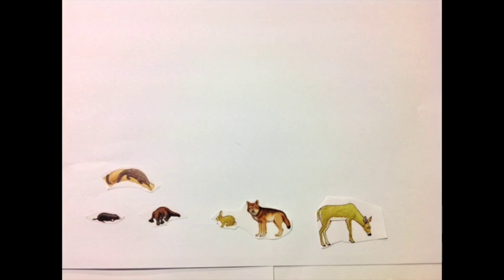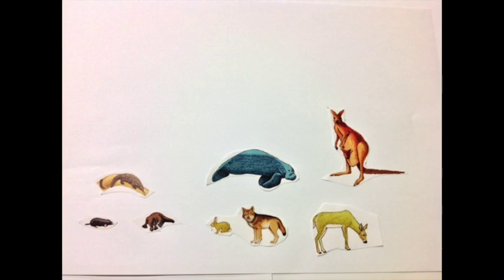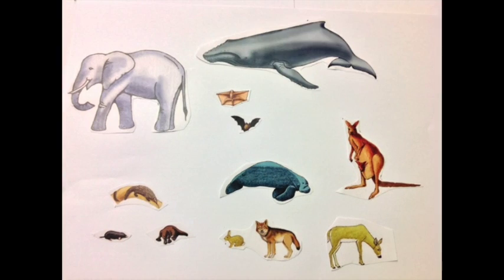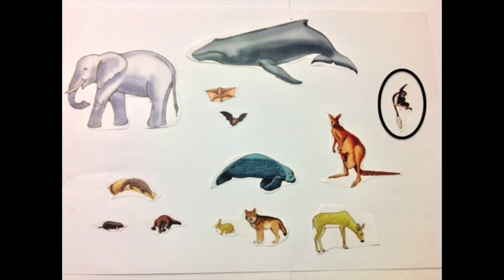These warm-blooded animals evolved, changed, adapted, and diversified. They were able to conquer the land, the skies, the seas, and the trees.